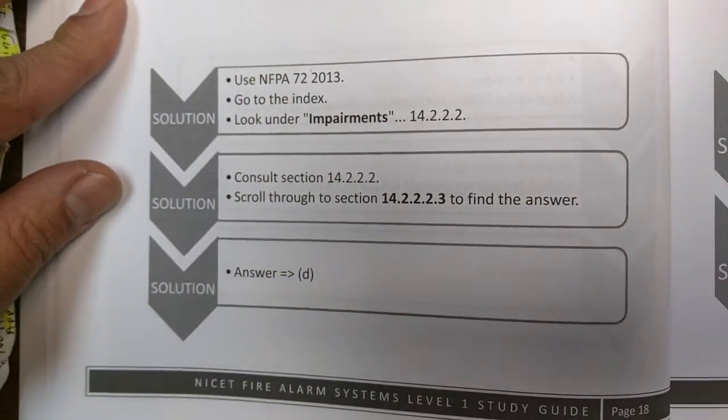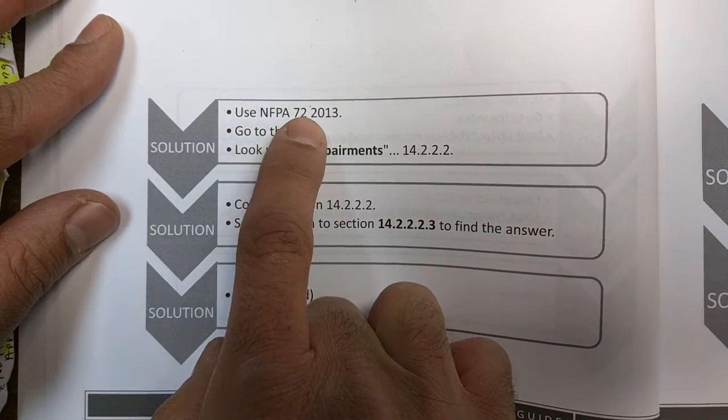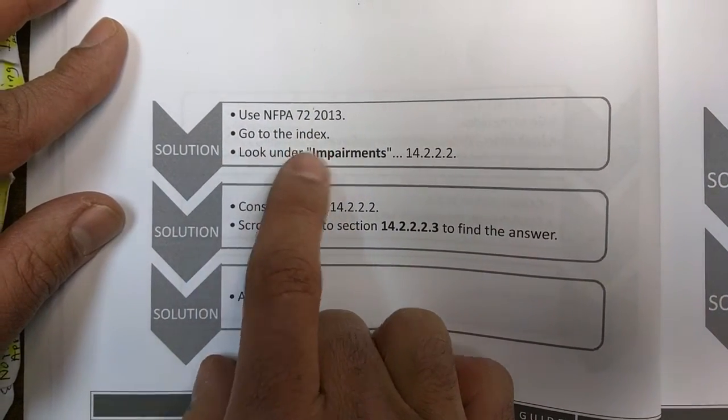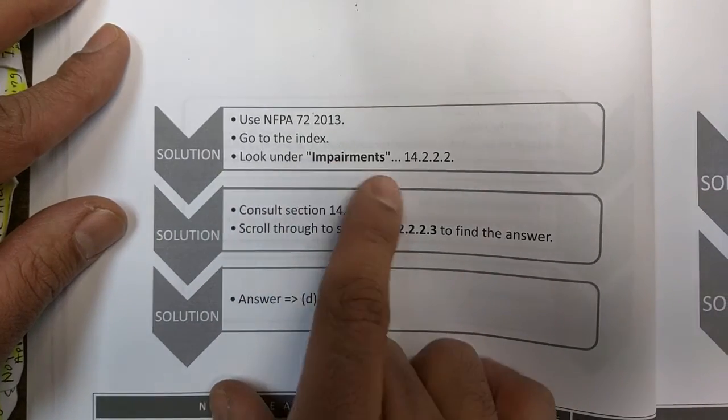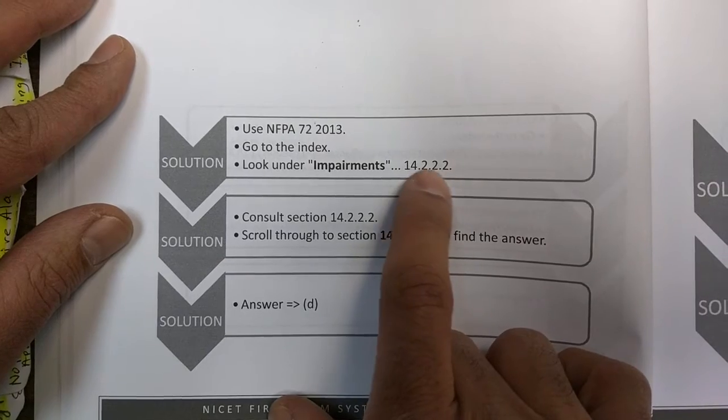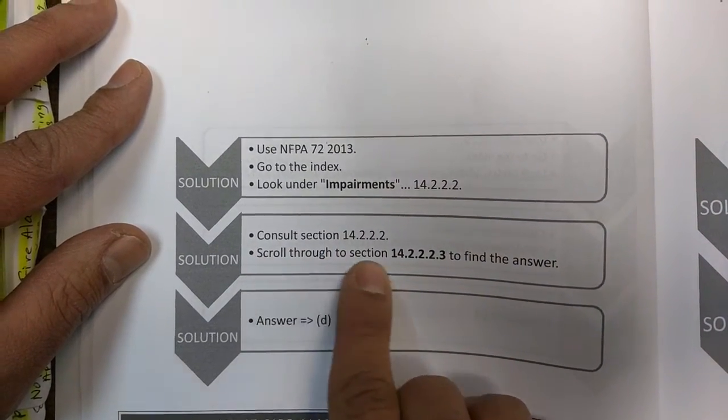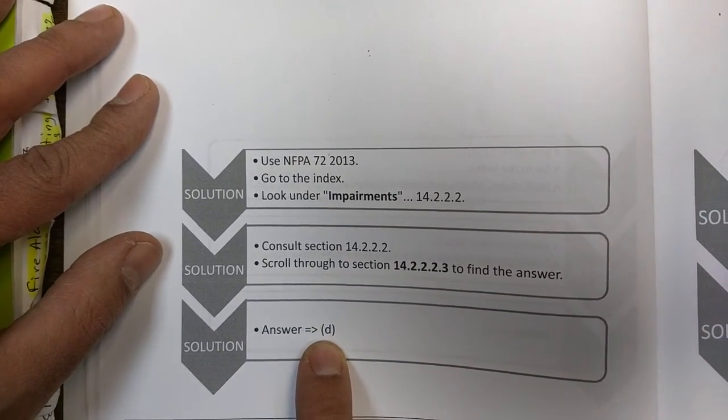So here is the step-by-step solution on how to arrive at the answer. Use NFPA 72 2013, go to the index, look under impairments, which says to consult this section of the code. Consult section 10.4.2.2.2, and you're basically going to arrive at your answer D.